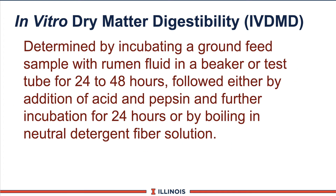Another term you'll see at times is in vitro, meaning outside of the cow — dry matter digestibility. This means we have taken rumen fluid, mixed it with your forages, and that would be the wet chemistry, giving us in vitro dry matter digestibility. That's the same methodology as in vitro NDF digestibility. Just be sure you know which one is dry matter and which one is fiber values.